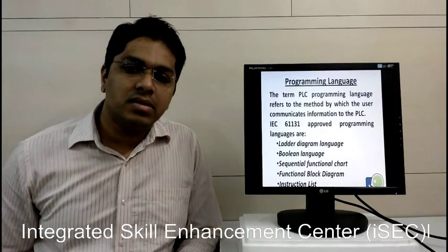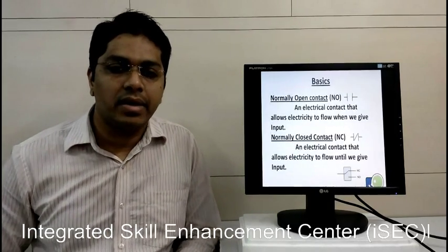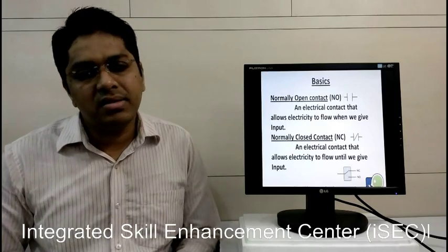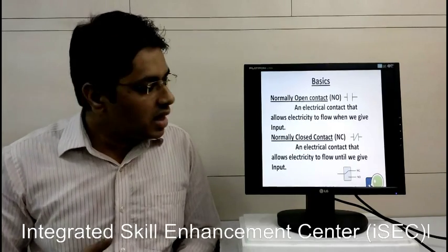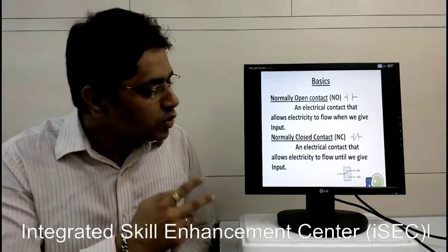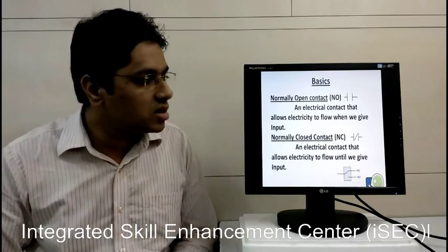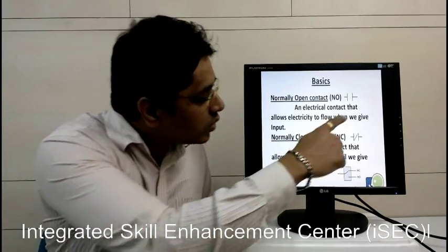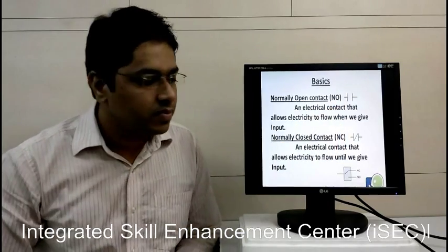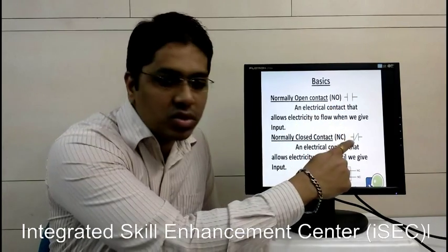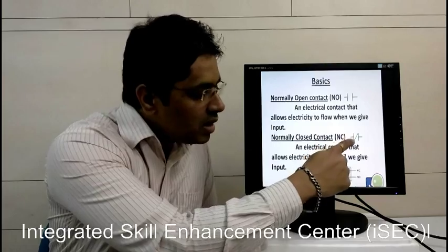Today we will discuss the basics of ladder diagram. Ladder is similar to relay logic, so there are two types of contacts or input contacts. One is NO, normally open contact, and the second one is NC, normally closed contact.